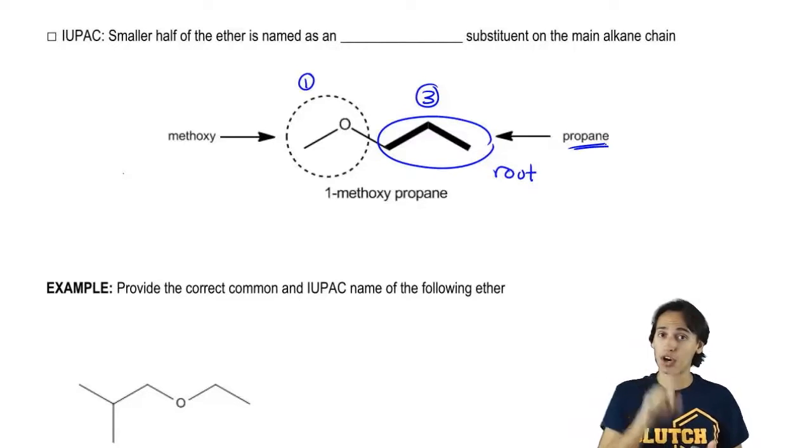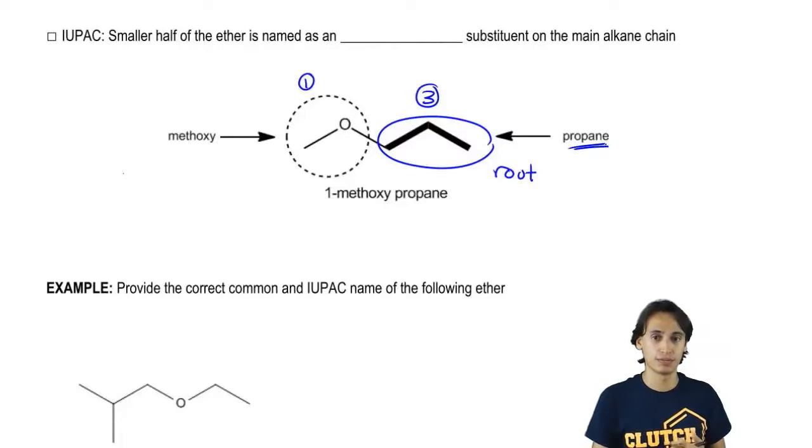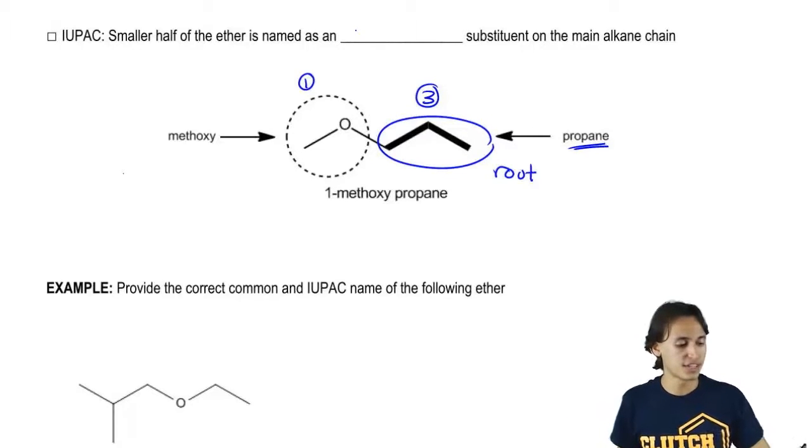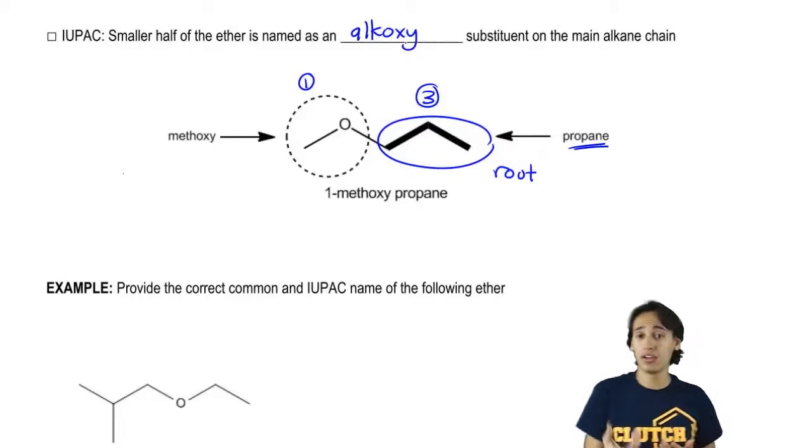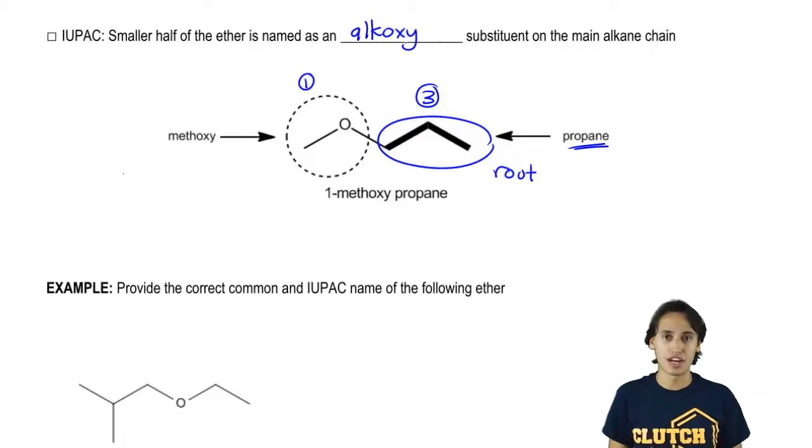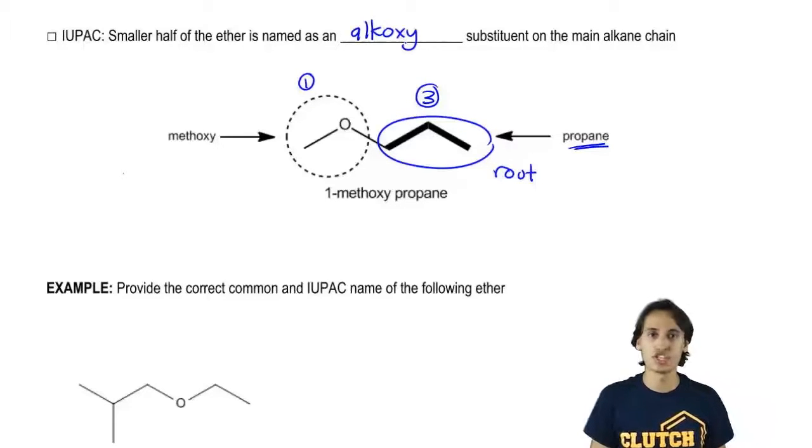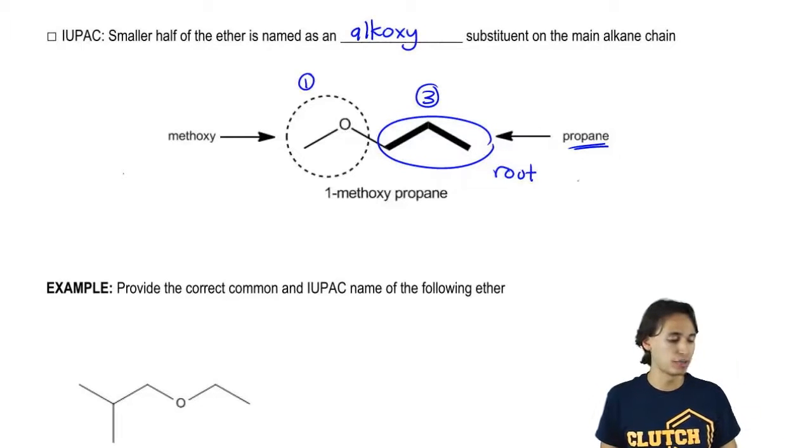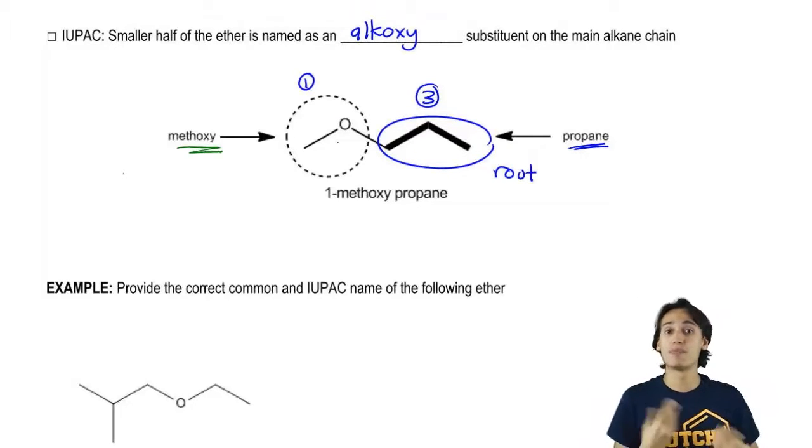Now I just have to name the OR group that's attached to it. And the way that we name OR groups is as alkoxy groups. So ALK just stands for the number of carbons in the chain. So you can imagine that if it was a four carbon chain it would be butoxy, four carbons. So in this case this one's really easy. I just have a one carbon chain attached directly to the O so this would be considered methoxy.